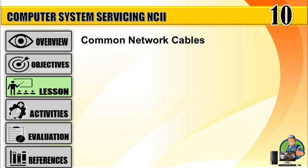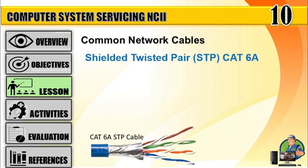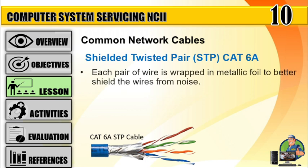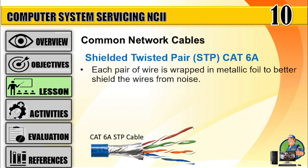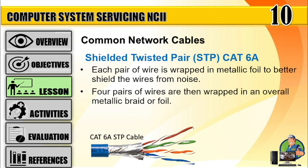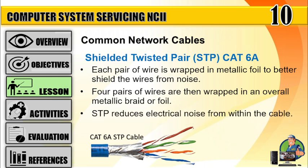Number 2: Shielded Twisted Pair (STP) or Cat6A — each pair of wires is wrapped in metallic foil to better shield the wires from noise. Four pairs of wires are then wrapped in an overall metallic braid or foil. STP reduces electrical noise from within the cable.